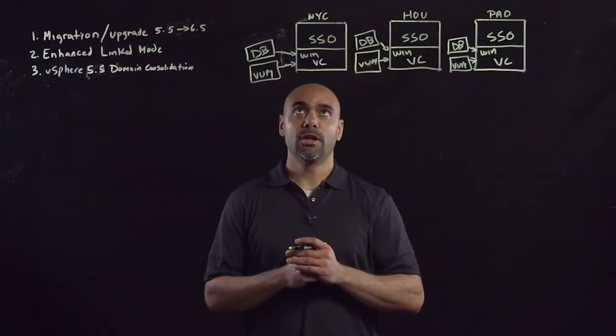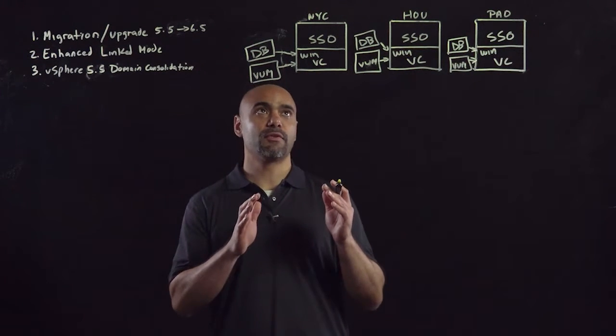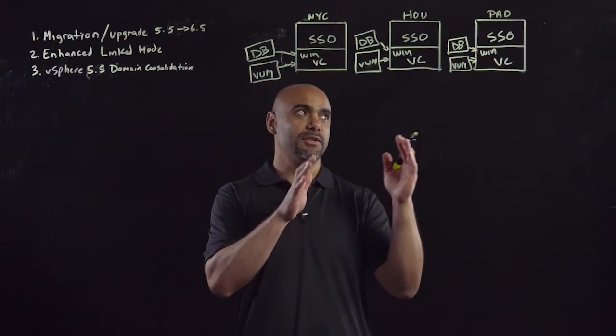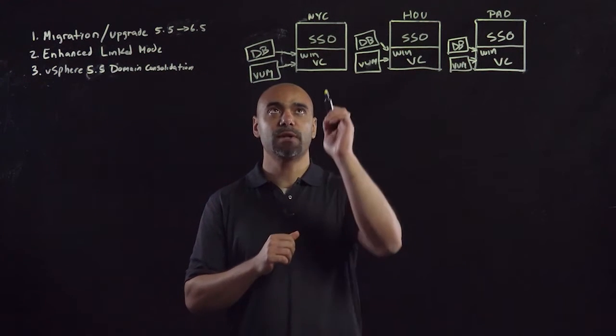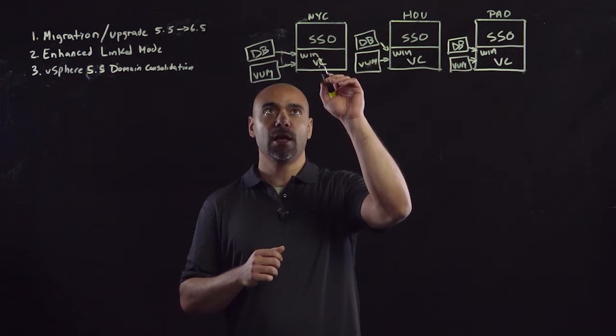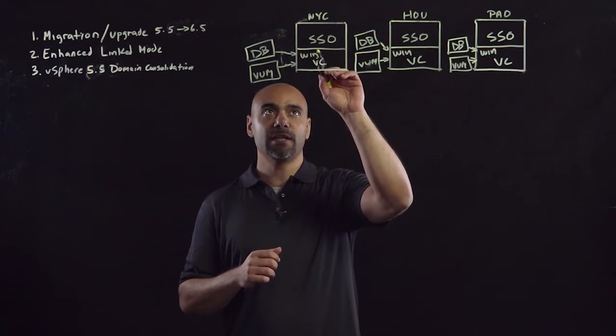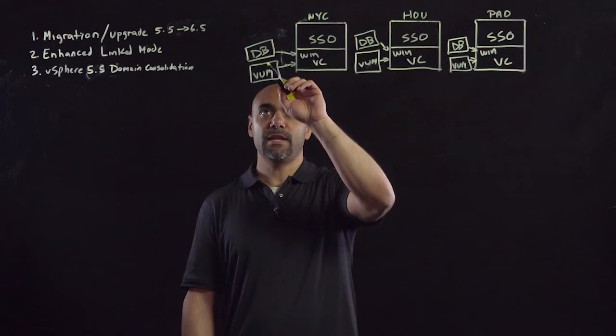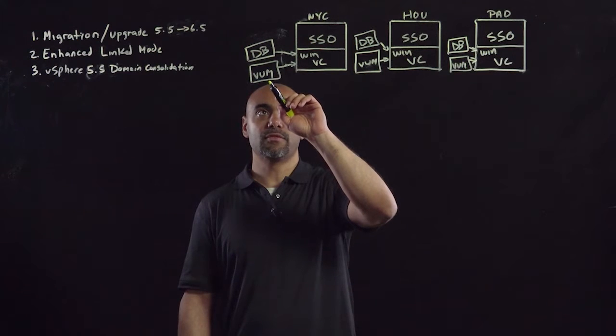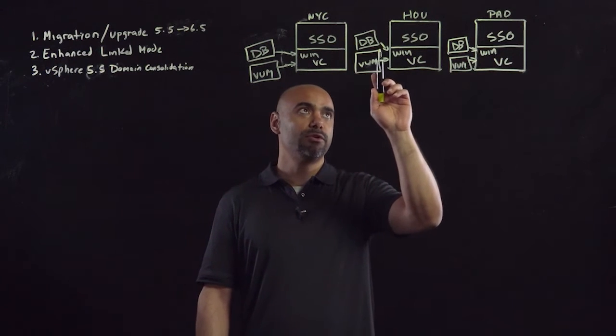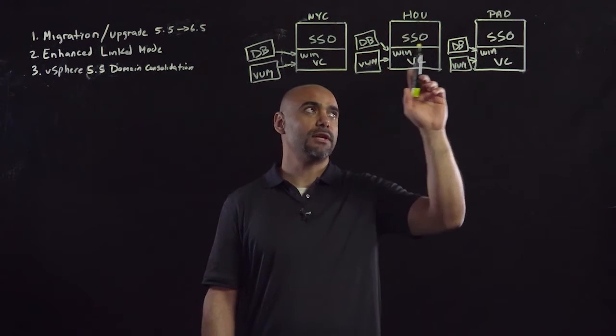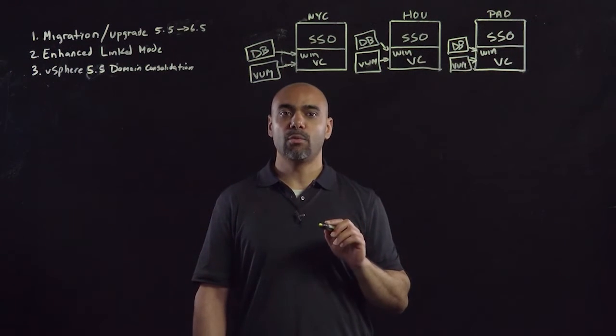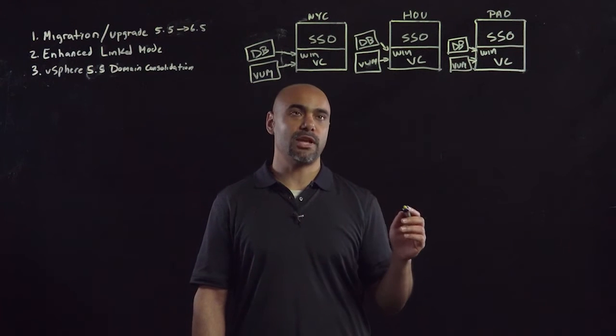Up here on the whiteboard, I have three different sites that are siloed by three different SSO domains. So the first one I have is NYC, which is an embedded deployment running SSO and a Windows vCenter server. I also have an external database and an external VUM server running here. And the other two sites, the one in Houston and the one in Palo Alto mirror that. But again, they cannot communicate with one another, so they're pretty much siloed.